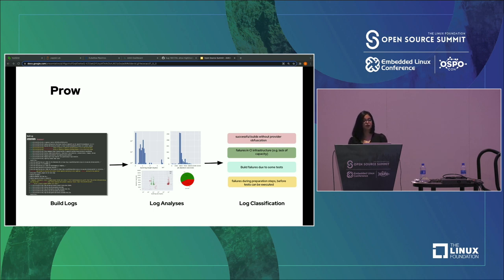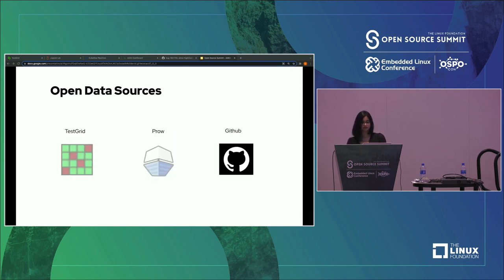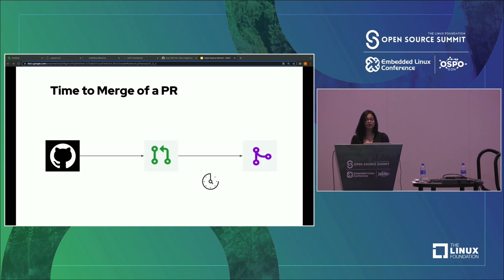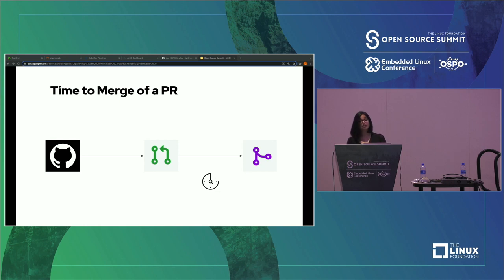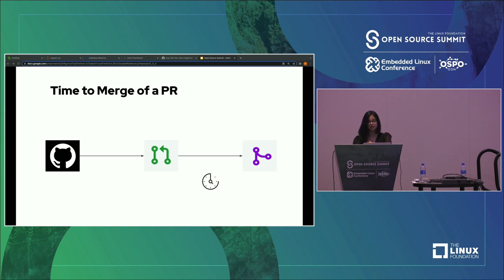Now we're going to move to another data source — GitHub. The builds and tests that are running on the PRs are because of the changes that are happening in the application's code base. The goal of CI is to automatically identify if any of these code changes are going to cause problems in the deployed application. Therefore, information on the running tests and builds along with the information within the GitHub code repositories — such as the metadata and the diffs about the PRs — can give us more insights on the overall CI process and ultimately lead us to the root cause of the failure.